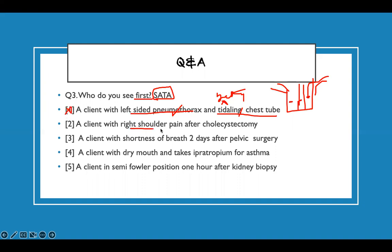A client with right shoulder pain after cholecystectomy. Ask yourself - the gallbladder is on the right upper quadrant. After they remove the gallbladder, that is cholecystectomy, they are going to have pain on the right because of the gas. It's referred pain to the right upper shoulder. So therefore this is unexpected. I got to be sharp.